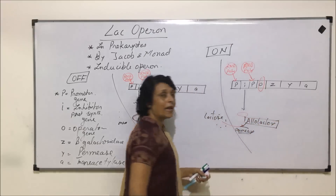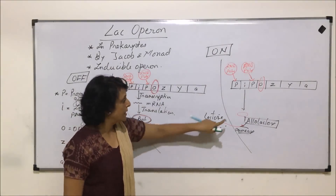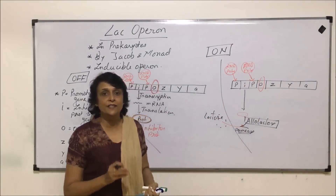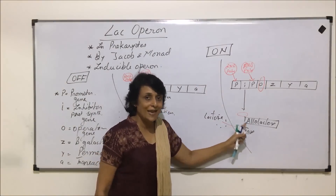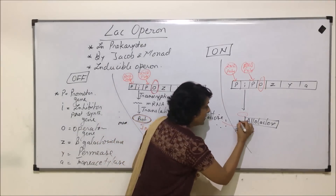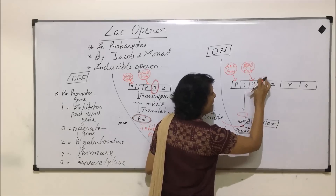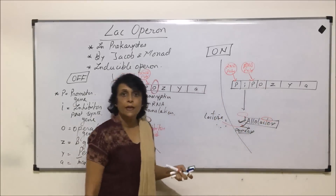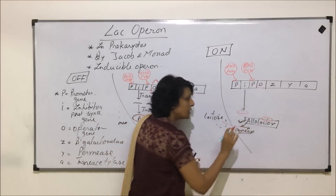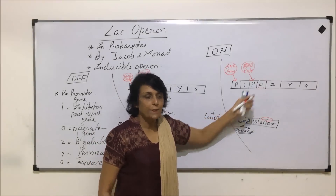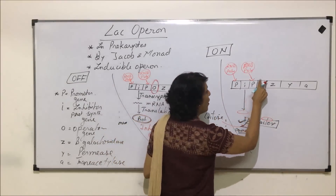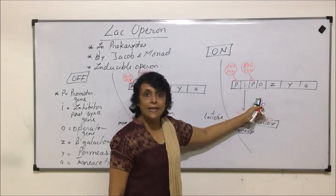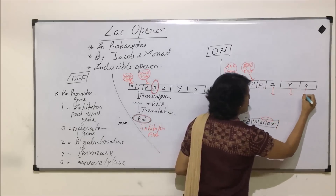As soon as allolactose is formed, something very interesting takes place. This inhibitor protein, which was attached to the operator gene, has a very high affinity towards allolactose. So as soon as some molecules of lactose get modified into allolactose, this protein leaves the operator site and goes and attaches to allolactose — because it has a higher affinity towards allolactose compared to the operator gene. As a result, the block from the operator gene is removed, and this RNA polymerase is now able to slide over it, and transcription takes place.